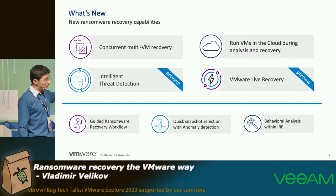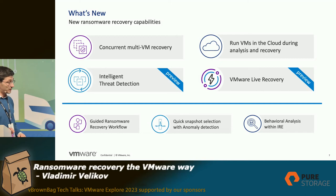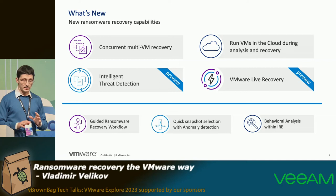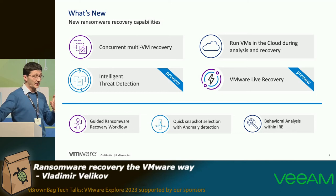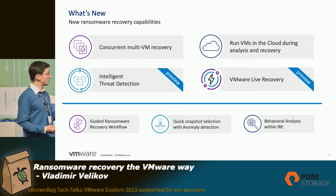Also announced today: intelligent threat detection — an AI-based module that is part of the ransomware recovery solution. It analyzes your snapshots even offline and checks for ransomware even before encryption kicks in. It can tell you that you might be encrypted soon so you can take precautions, scan, and remove the threat quickly.